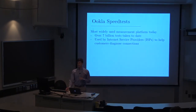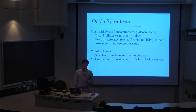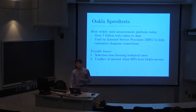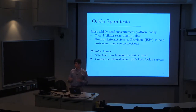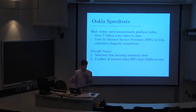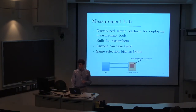OOKLA speedtest is the most widely used measurement platform today with over seven billion tests to date. It's even used by internet service providers to help their customers diagnose connections. However, there are some possible biases. There's a selection bias that favors technical or 'geeky' users — people with working knowledge of networking — but most people don't know what latency or throughput means. There's also a conflict of interest when ISPs host OOKLA speed test servers in their own infrastructure, where they could potentially prioritize traffic between the server and the client.